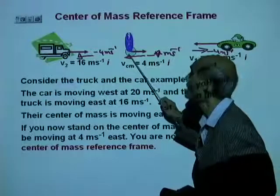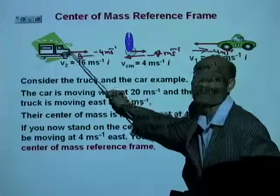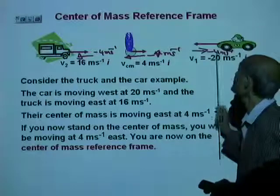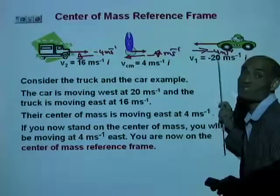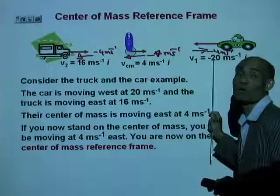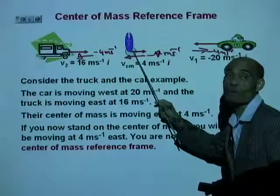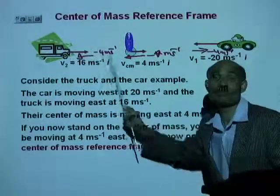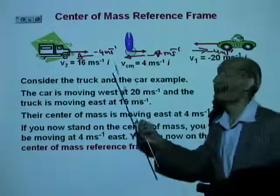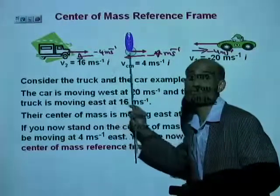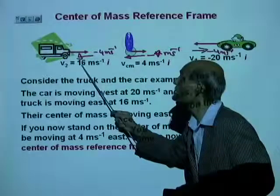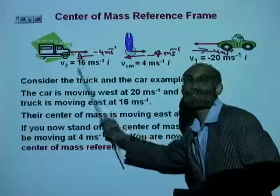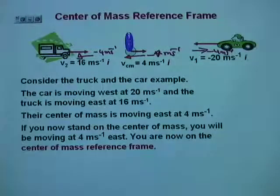Now, when the center of mass is at rest, what is the velocity of the car? It is now negative 20 minus 4, which is negative 24 meters per second. When you observe from the center of mass, the car will appear to be going west at 24 meters per second. What is the velocity of the truck relative to the center of mass? It will be 16 minus 4, that is 12 meters per second east. Let's write that down.